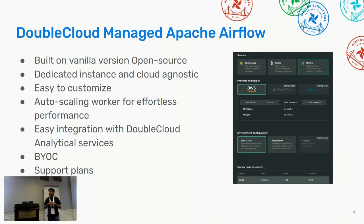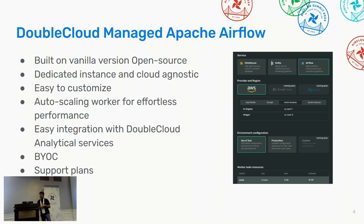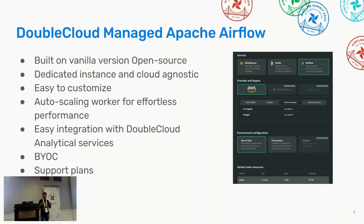It's cloud agnostic — currently on AWS, with GCP and Azure still in plans. Customers can also use bring-your-own-cloud, deploying the data plane in their own cloud provider. We have easy-to-customize features like custom Docker images and auto-scaling worker nodes. All the blocks in the platform are tightly integrated, which applies to Airflow as well — it integrates with existing DoubleCloud services like ClickHouse, Transfer, and Apache Kafka. That makes it easy to orchestrate within the complete data ecosystem or with any third-party services.